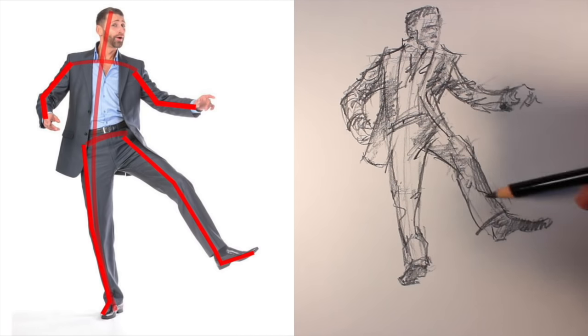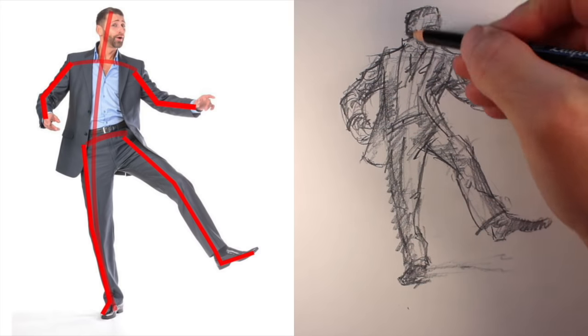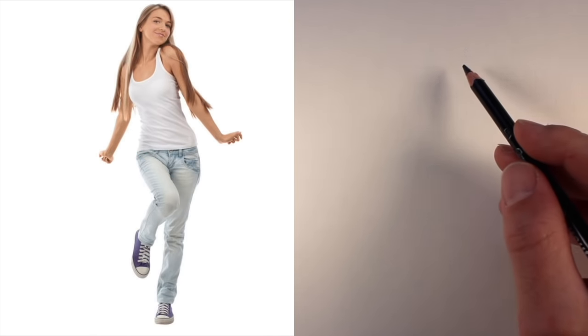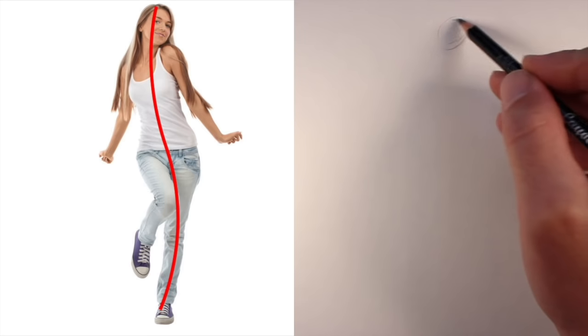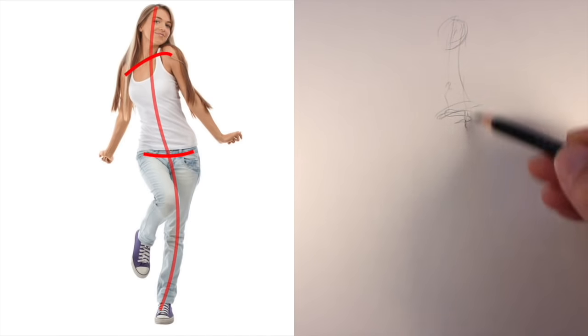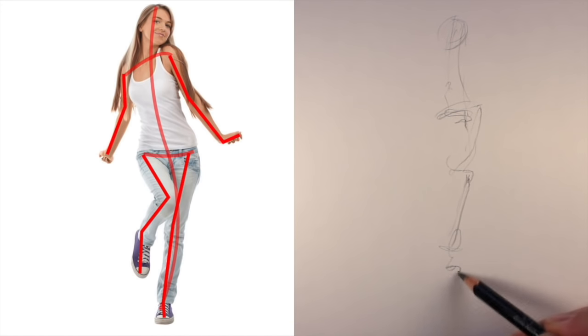As I mentioned before, gesture drawing is also about speed. So as you begin to create gesture drawings of your own, you may consider timing yourself. Set a timer for 10 minutes and try to create an entire pose in that time frame. Then work yourself back to six minutes and then four minutes, and then try to create an entire gesture drawing in just under a minute. Doing this will increase your overall drawing speed and accuracy.